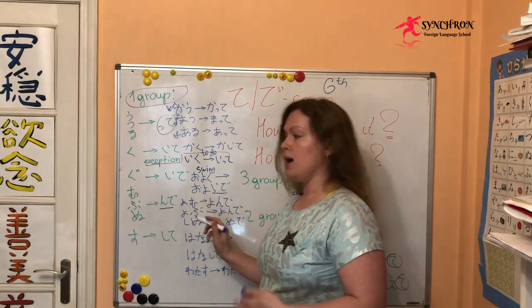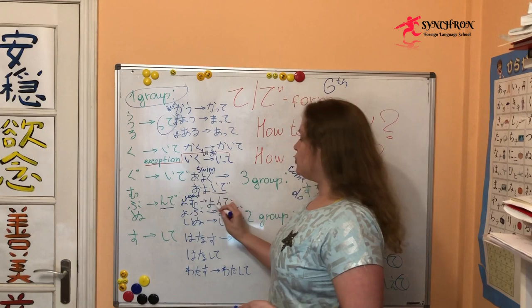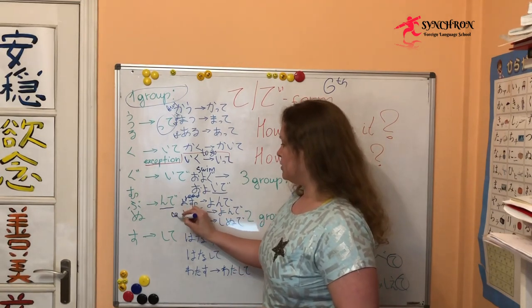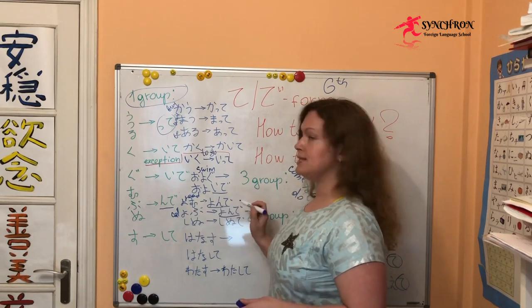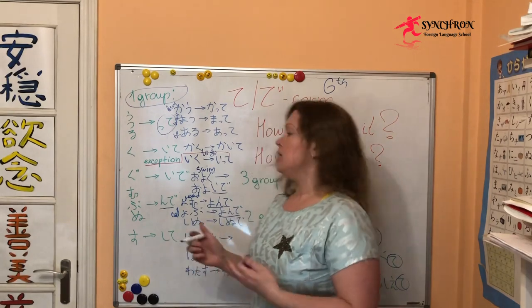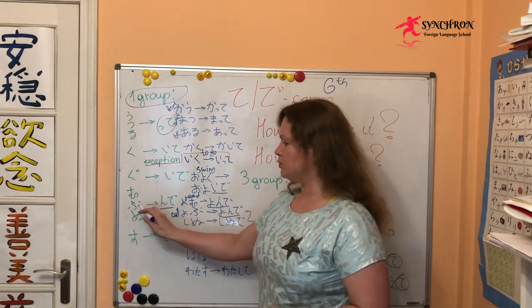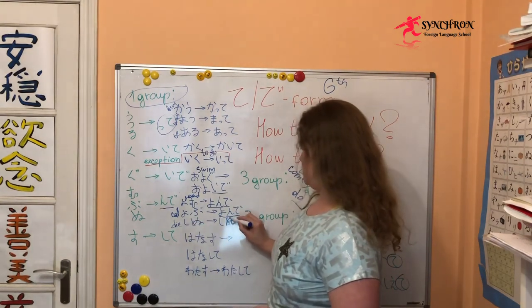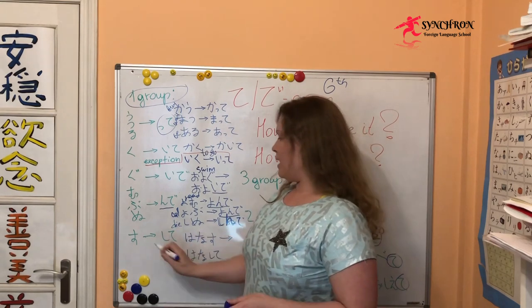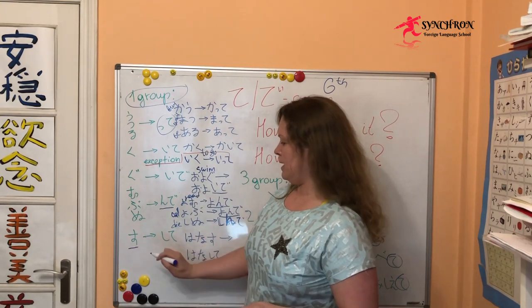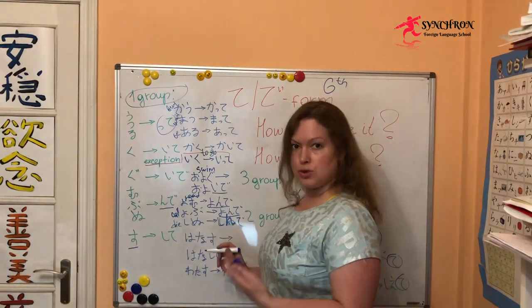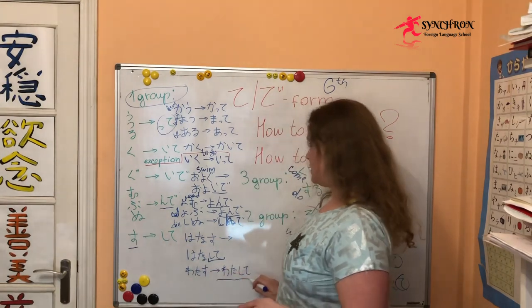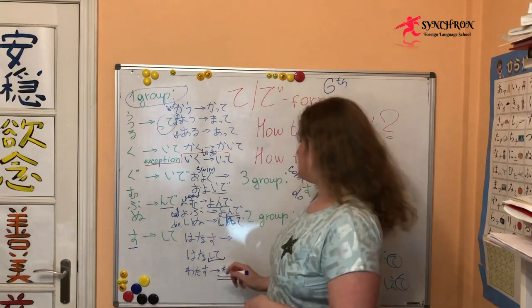読む (yomu, to read) — む becomes んで: 読む → 読んで (yomu → yonde). Note that 呼ぶ (yobu, to call) — for example, to call a taxi — also becomes 呼んで (yonde). The kanji is different but the sound is the same, because both む and ぶ become んで. Also 死ぬ (shinu, to die) → 死んで (shinde). The last ending is す (su) — す becomes して (shite): 話す (hanasu, to talk) → 話して (hanashite), 渡す (watasu, to pass something over) → 渡して (watashite). このざっし を 渡して ください — please pass it over to someone.